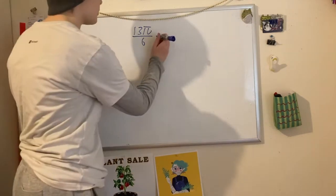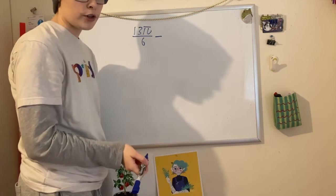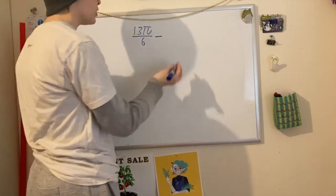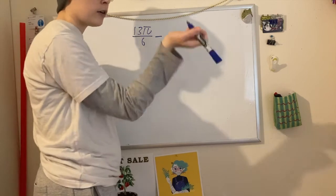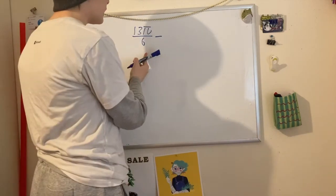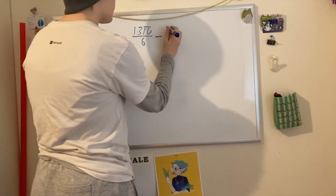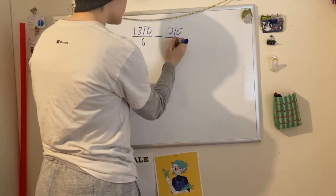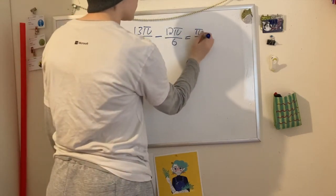all you need to do is subtract a certain number of rotations. We can see that it's just over one rotation, so we're going to subtract 2π, which is one full rotation. We want it to have a common denominator, so it's going to be 12π/6 is equal to 2π,